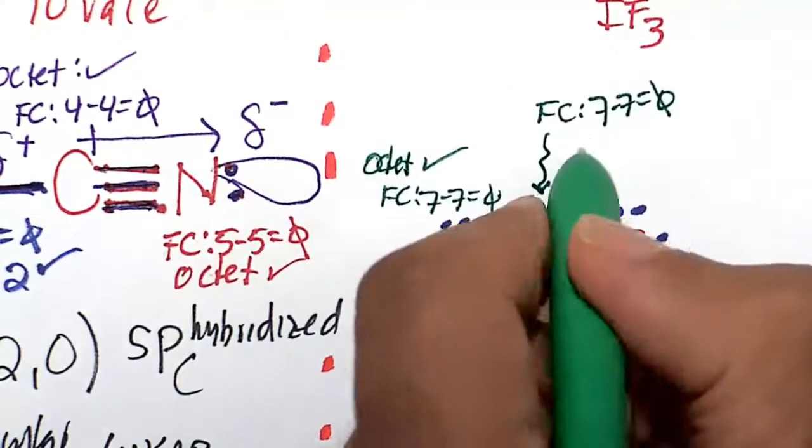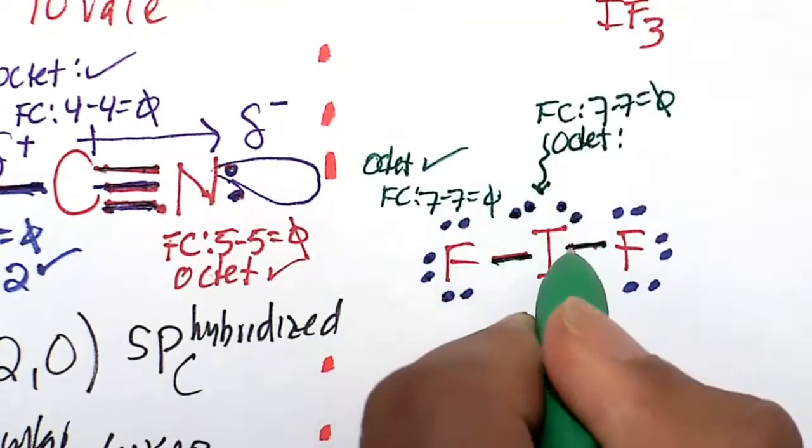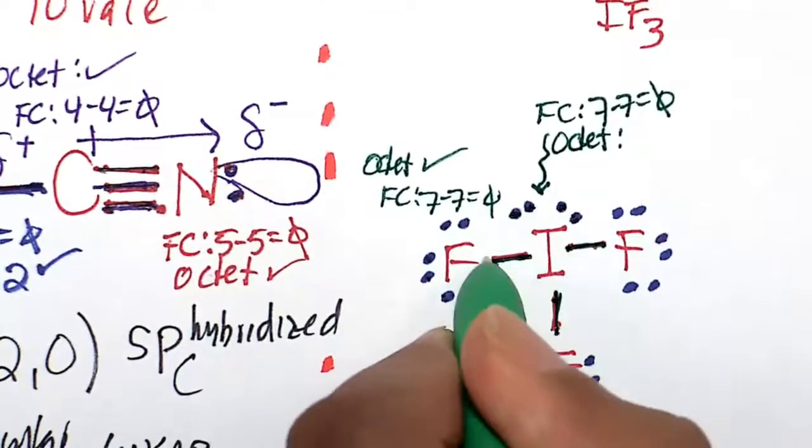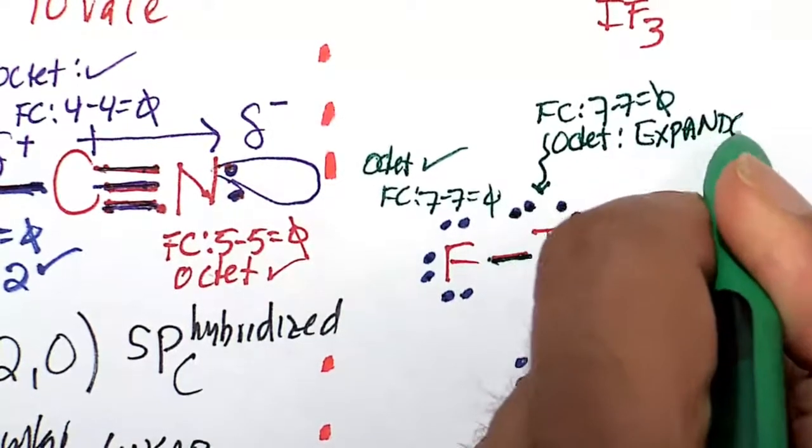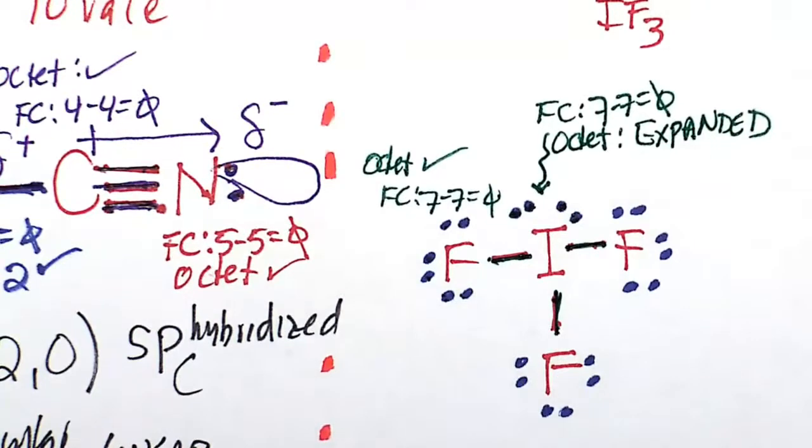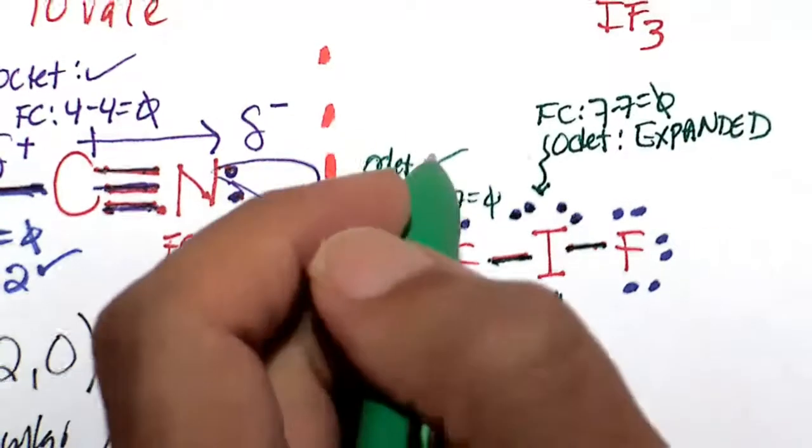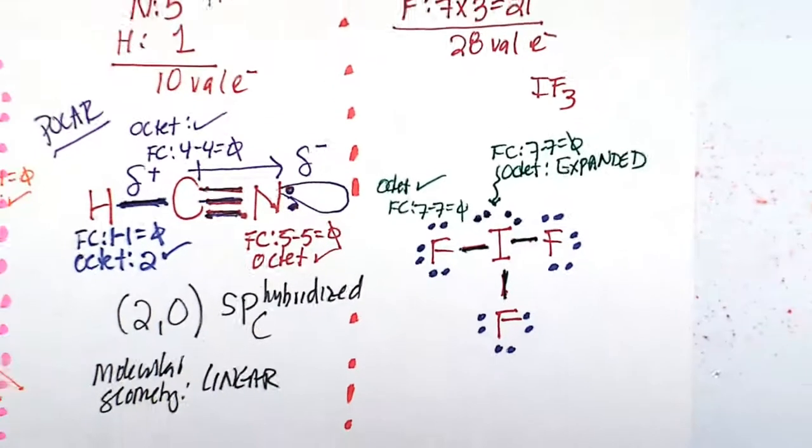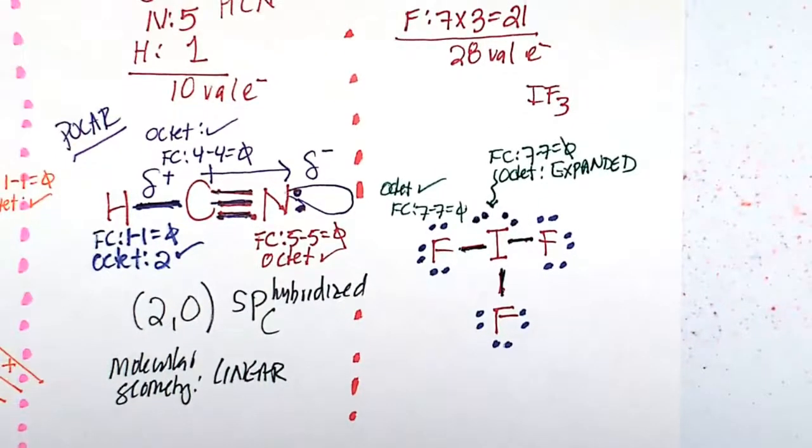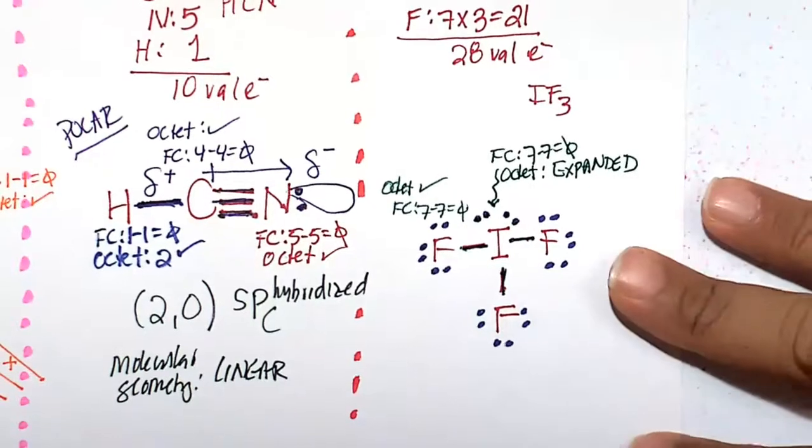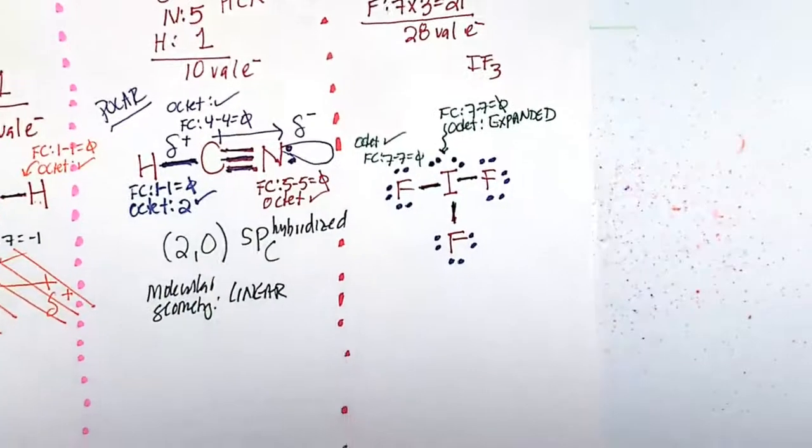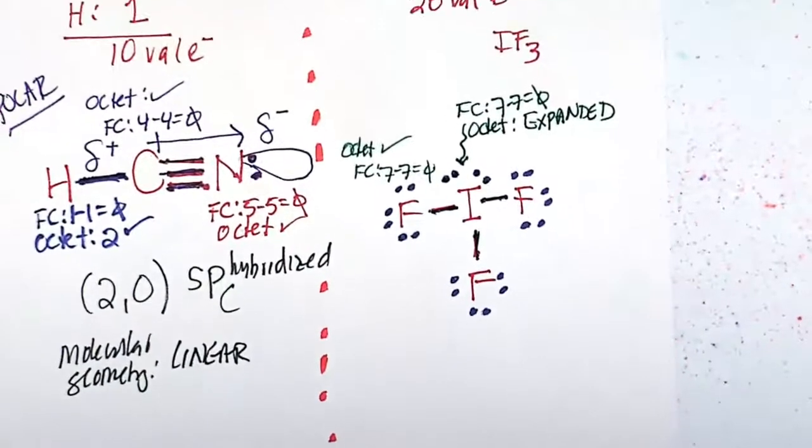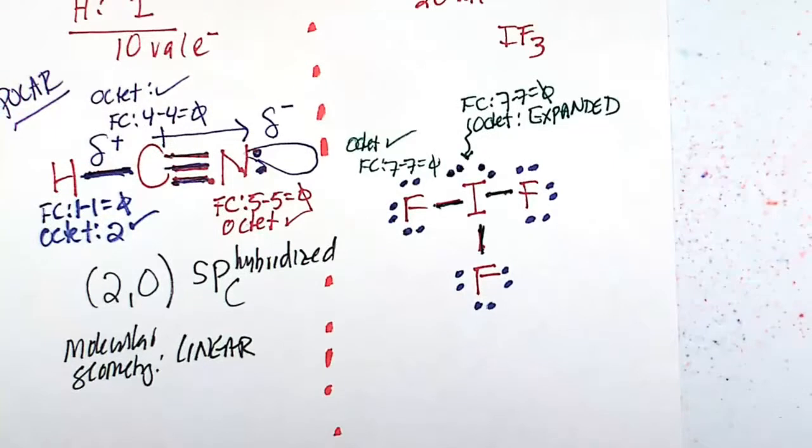Let's look at the octet rule for the center iodine. Counting gives us 10 electrons. Again, it's not an octet, but that's okay. We call this an expanded octet, and that should be totally all right. The octet rule is meant to be broken, but the formal charge rule should be as low as possible to reflect the charge on the atom. The expanded octet is okay to give us a zero formal charge on the whole molecule.